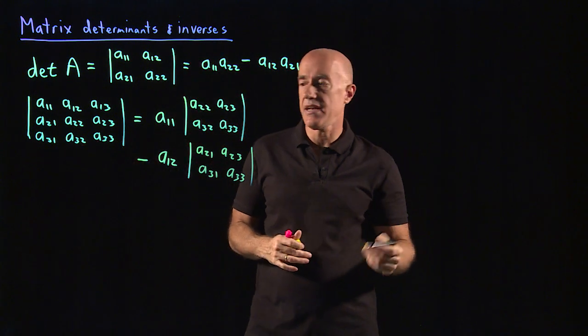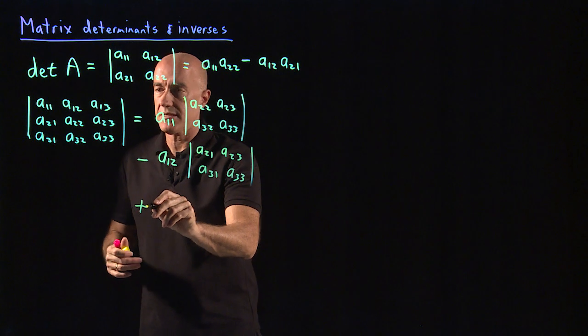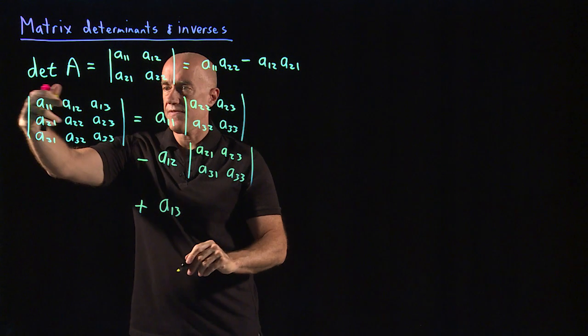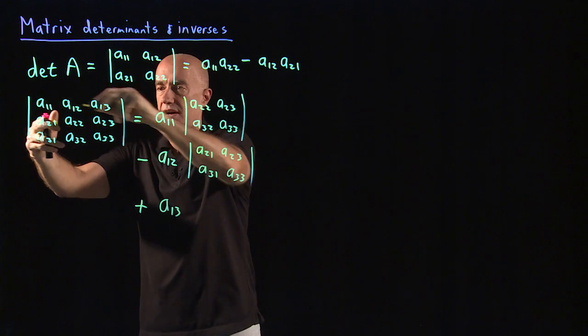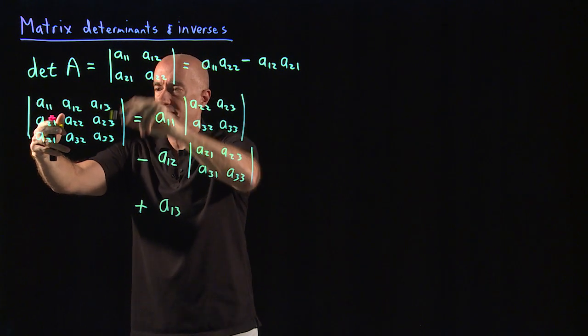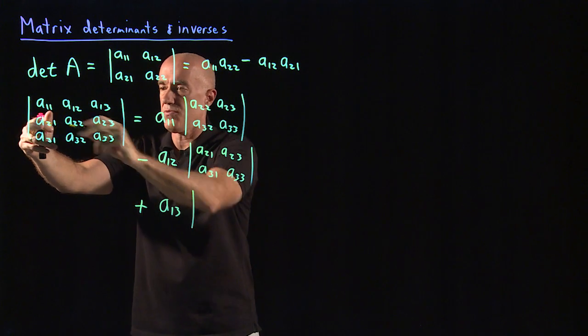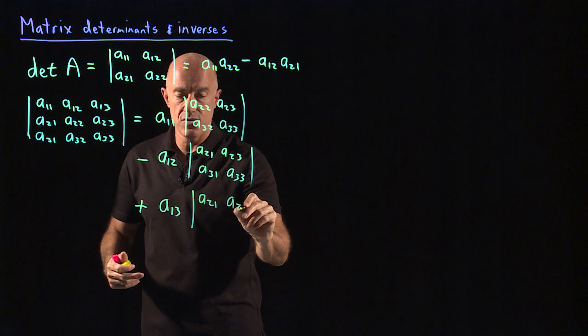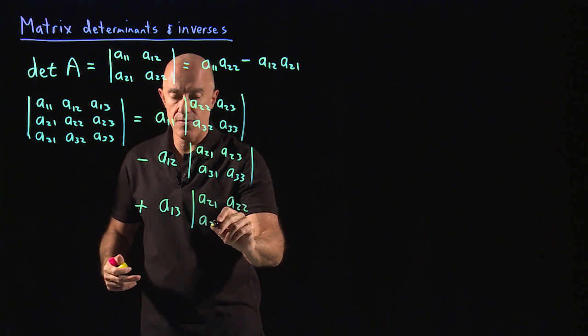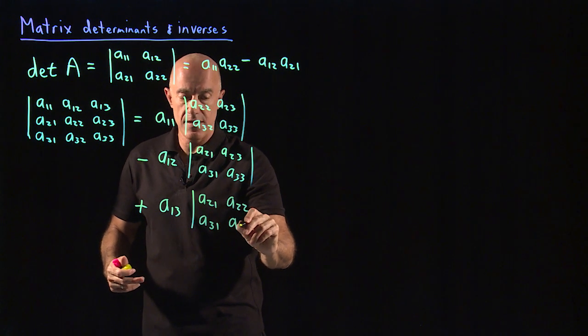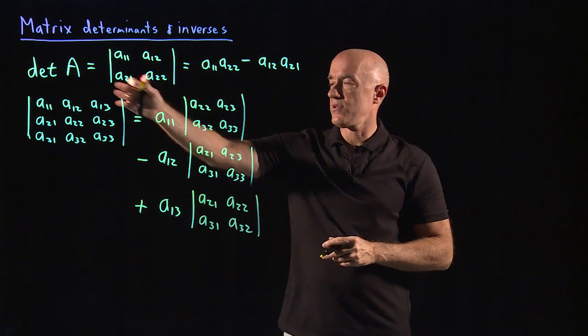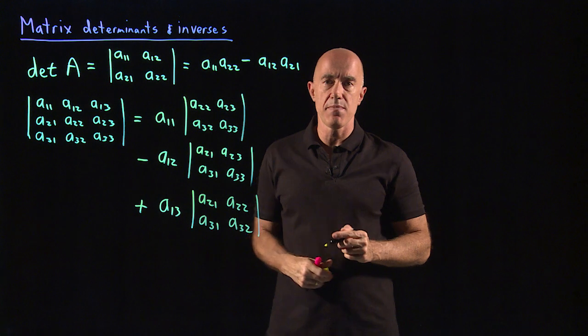Then you change the sign again, so you have a plus. You have the third element in the first row and then you cross out the first row in the last column. And you have the two by two determinant of A21, A22, A31, and A32. So that's how you remember the determinant of a 3 by 3 matrix.